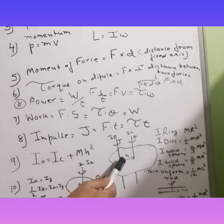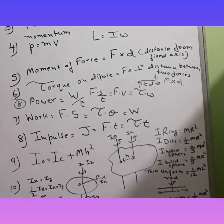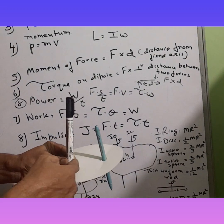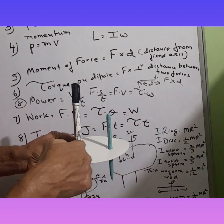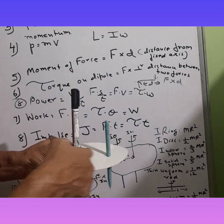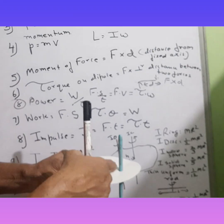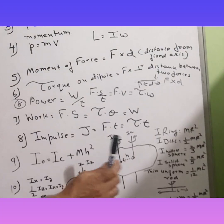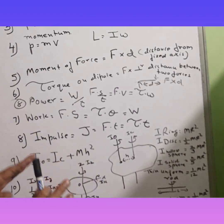And what is H? H is the distance between Ic and I₀. Suppose I hold this here — this is Ic, and this is I₀. The distance between them is H. So this is the formula for finding the moment of inertia when rotating like that. This is called the parallel axis formula, and lots of numerical problems come on this.